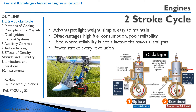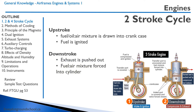In a two-stroke cycle, there is a power stroke every revolution. There are two strokes in a two-stroke cycle. The first is the upstroke — during the upstroke, the fuel, oil, and air mixture is drawn into the crankcase and into the cylinder, and the fuel is then ignited. Then there is the downstroke of the piston, at which point the exhaust is pushed out and the fuel-air mixture is forced into the cylinder.